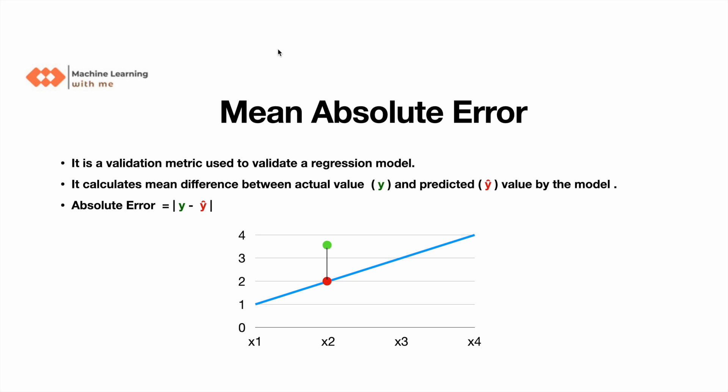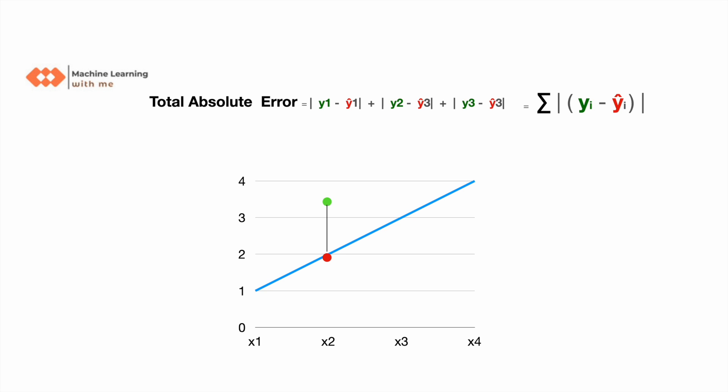Now let's calculate total absolute error. In order to calculate total absolute error, we add the absolute errors for all other data points. The actual points may be above or below the regression line, so in order to avoid negative values, we use the absolute function or modulus function.